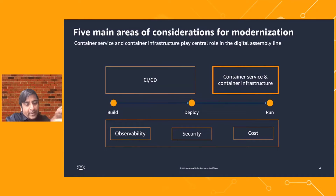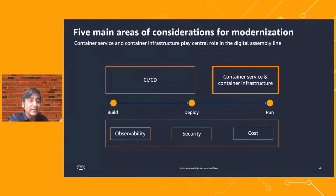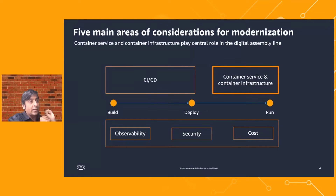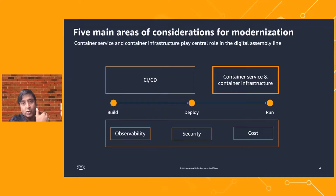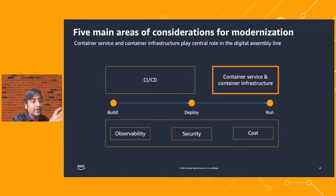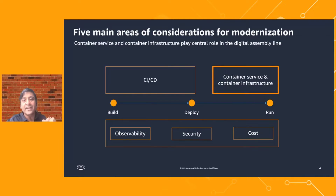When you zoom in into the modern approach to building, shipping, and running software — especially using containers — there are at least five main areas. One is the CI/CD part: continuous integration and continuous deployment, where you check in code, trigger the build, trigger the deploy, and trigger automated tests. Then there is the container service and container infrastructure part — the environment for containers to run, scheduling, packing, provisioning the right infrastructure, and ensuring the instrumentation for observability.